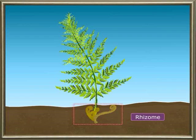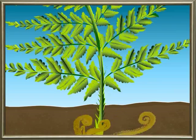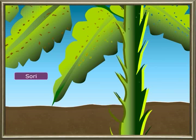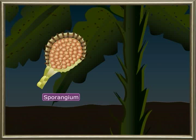In the fern plant, a part of the stem called the rhizome is inside the soil. The roots help to fix the plant and absorb nutrients. The upper part of the stem bears a number of leaves called fronds. A number of small brownish spots appear on the lower side of the older leaves. These spots are called sori, and the fronds bearing sori are called sporophylls. Each sorus contains a number of small capsules called sporangia, and spores are produced in the sporangium.